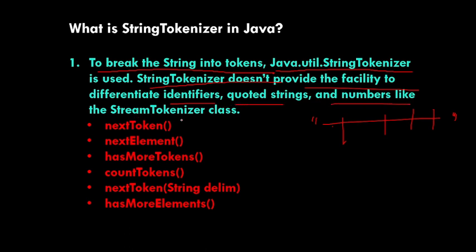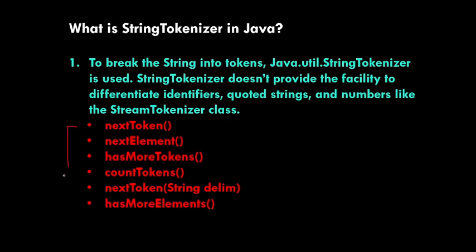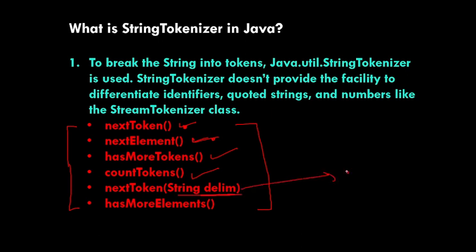If you have a particular string and want to break it into tokens, you can use StringTokenizer. It does not provide the facility to differentiate between identifiers, codes, strings, and numbers. It has six methods: nextToken() checks the value of the next token; nextElement() checks the next object element; hasMoreElements() works like in collections; countTokens() counts available tokens; nextToken(delimiter) gives the next token based on a delimiter like colon or comma; and hasMoreTokens() works similarly to hasMoreElements().